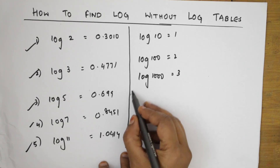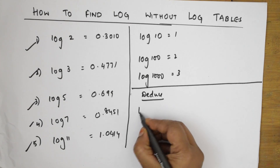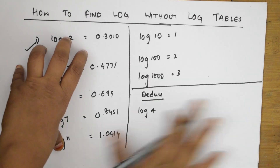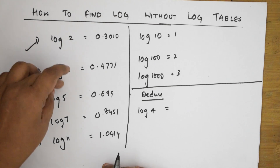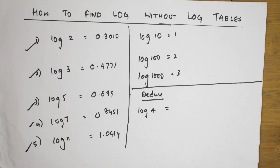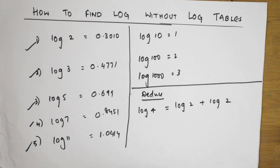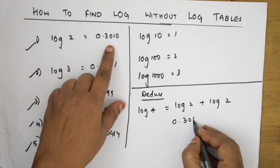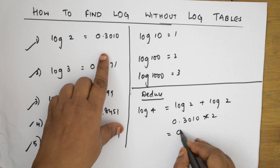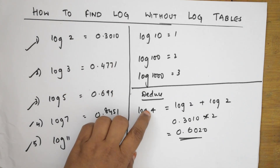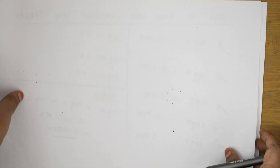Let me give you some important derivations before going to examples. Suppose I have to find log 4. I only know log 2, 3, 5, 7, and 11 — I don't have log 4 directly. But log 4 can be written as log 2 + log 2, since 2×2 = 4. Log 2 = 0.3010, so 0.3010 × 2 = 0.6020. So log 4 = 0.6020.